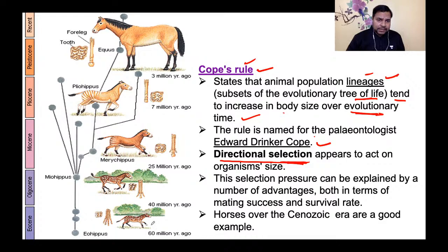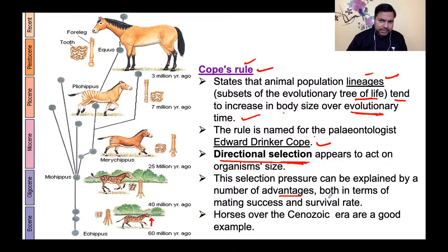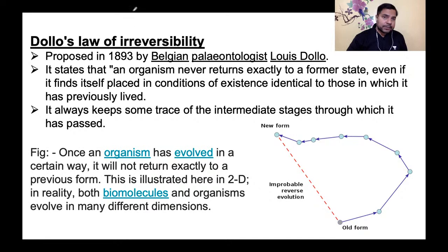Horses का example: शुरू में horse बहुत छोटा था, जैसे Eohippus। धीरे-धीरे उसका evolution हुआ — tooth structure और leg का लंबा होना, body size का बड़ा होना, unidirectional directional selection होती गई। Horses over the Cenozoic era are a good example of Cope's rule।